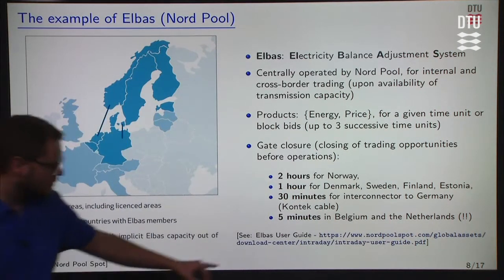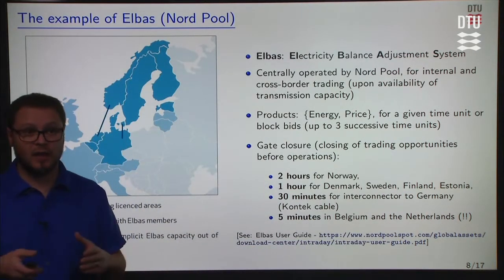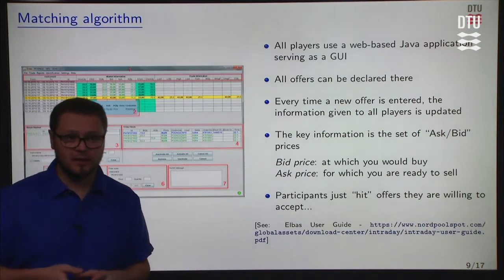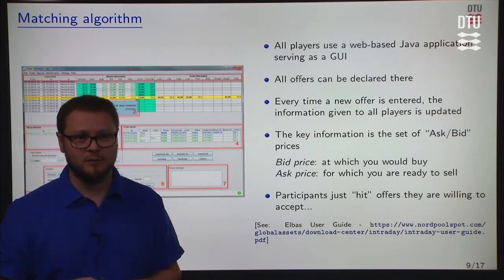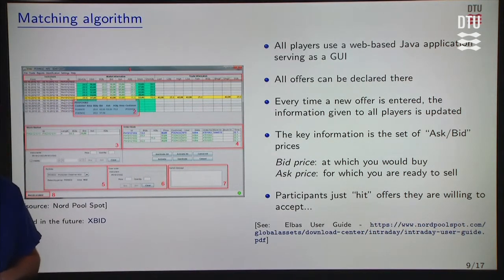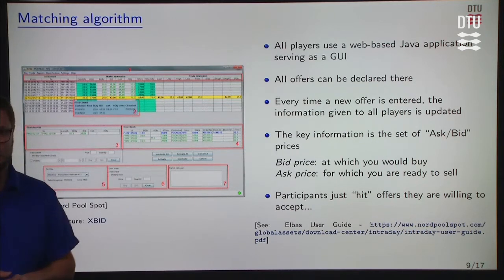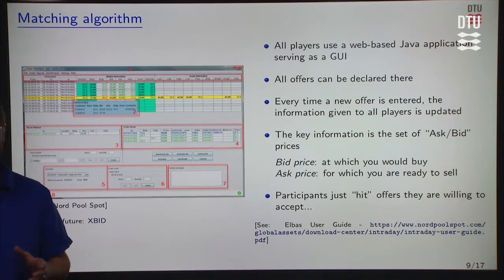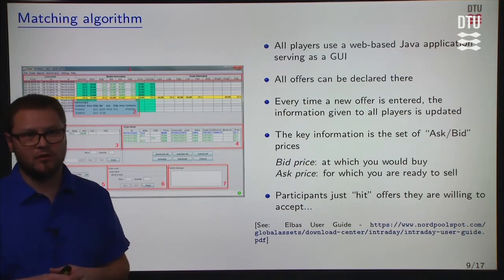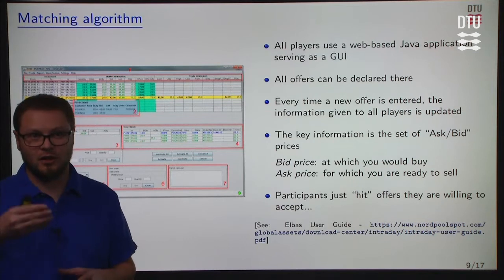For those interested, you may visit this link and have a clear and extensive description of Elbas as it is today. In practice, Elbas is a software tool. As a market participant, you would download a Java application that serves as a GUI and you can access the market this way. All offers can be declared there and all offers will be visible there. Every time a new offer is entered, the information is updated so that all players know the new offer has been made. And obviously, every time some offers are matched, the corresponding offers disappear from the list on your software screen.